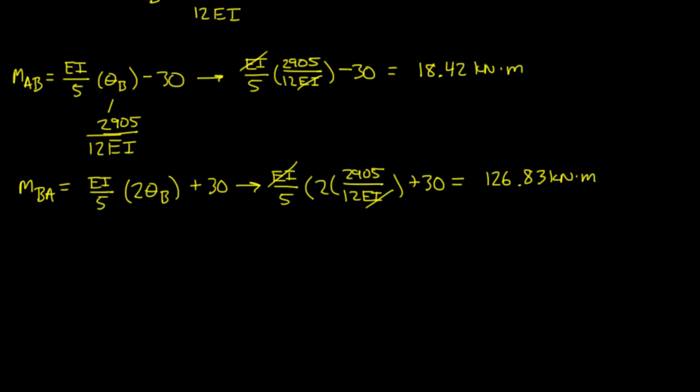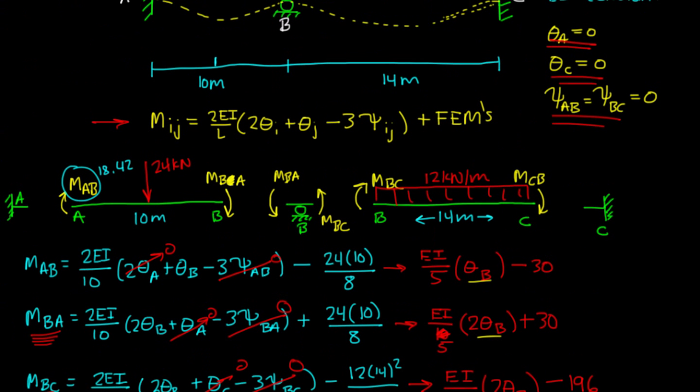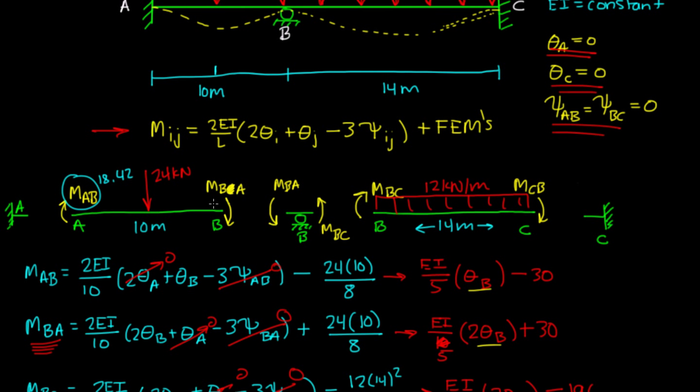That means it's a positive answer. So that means we drew this clockwise. We drew clockwise M_BA. That means it is going clockwise. It's a positive answer, our sign was right, our assumption was right. So this is 126.83.